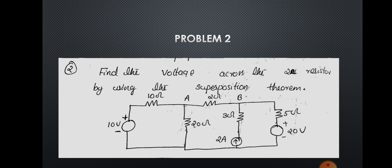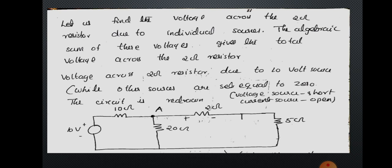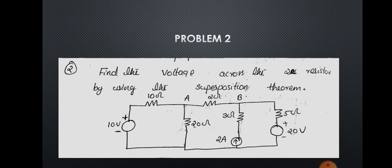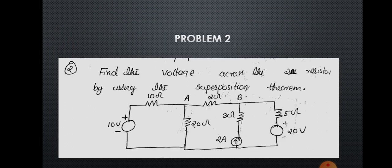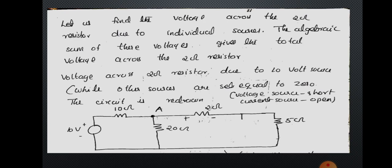In the first step, consider the effect of the 10 volt battery alone. The other sources are replaced: the 2 ampere current source is replaced by open circuit, so that branch is removed. The 20 volt battery is replaced by a short circuit, so 5 ohm will be there. The circuit diagram shows the 10 volt battery, 10 ohm, 20 ohm resistances, with the current source branch removed and the 20 volt source shorted.